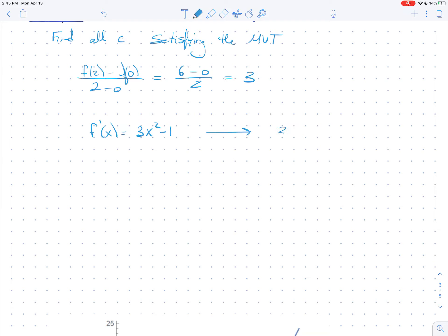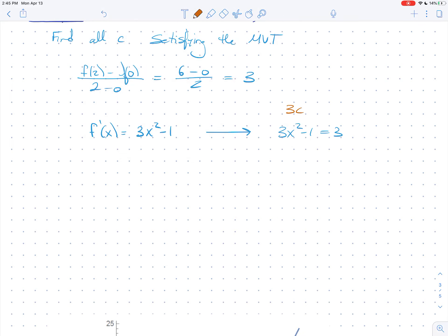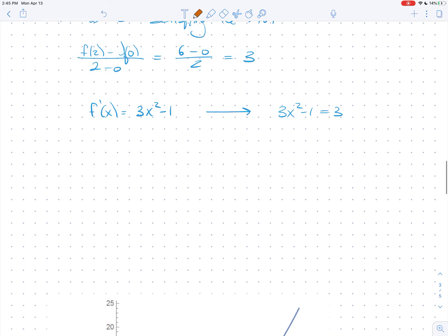You can also work with c's, whatever you want. It doesn't matter. I'll just leave it as x's. So 3x² - 1 equals 3. What I'm talking about, in case you're confused, is technically the mean value theorem involves a c. So you could say, okay, I'm going to solve where does 3c² - 1 equal 3. It doesn't matter if you use c's or x's, it's the same. I'm just going to solve this equation.